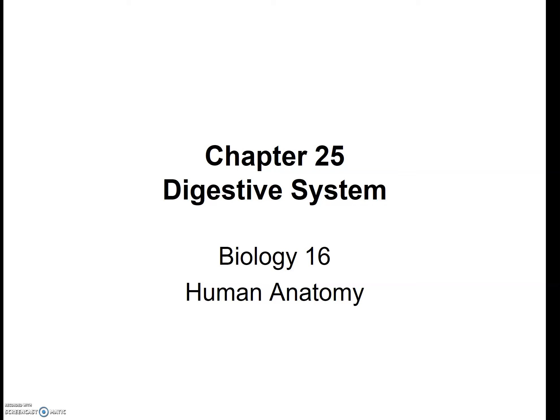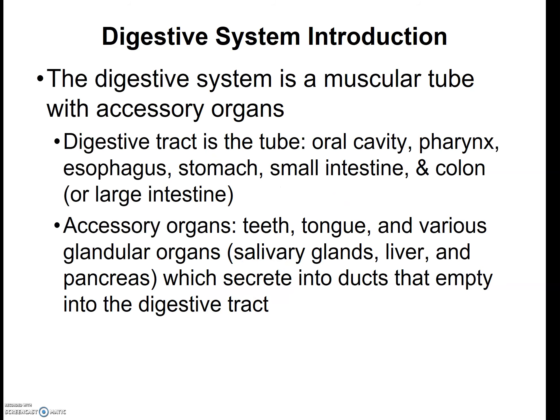The digestive system is basically a series of organs and a big muscular tube that pushes food, starting from the oral cavity or your mouth, through the pharynx or the back of your throat, down the esophagus, to the stomach, the small intestine, and eventually to the colon, which is also called the large intestine.